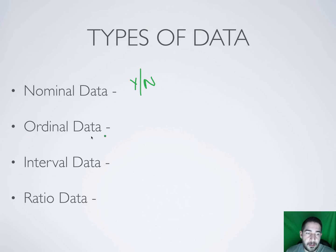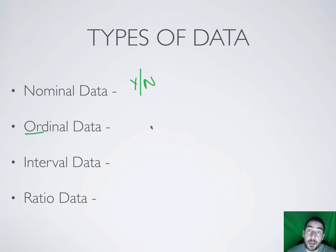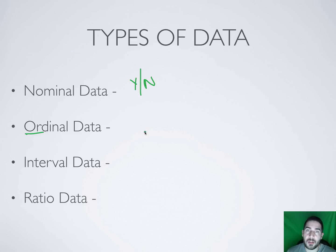Ordinal data is putting things in order — ordinal, order. So put your five favorite football players in order, put your favorite foods in order, or put which of these pictures you think is most attractive in order. There's a number one and a number five or ten, and they go in order.